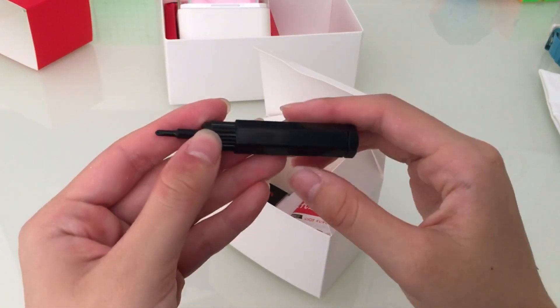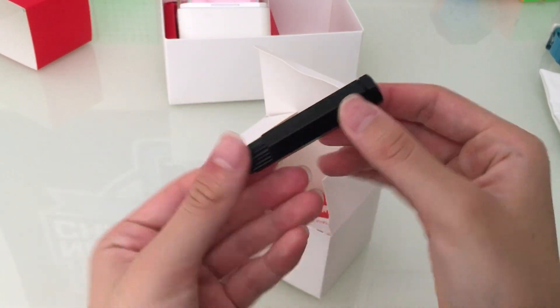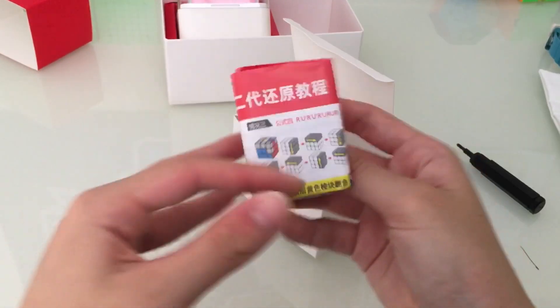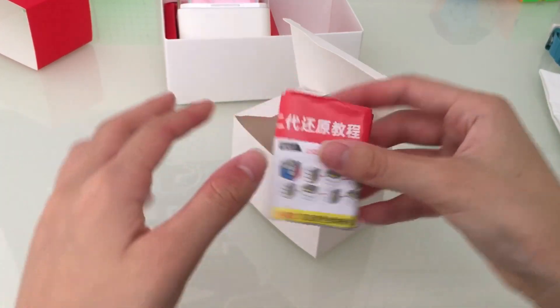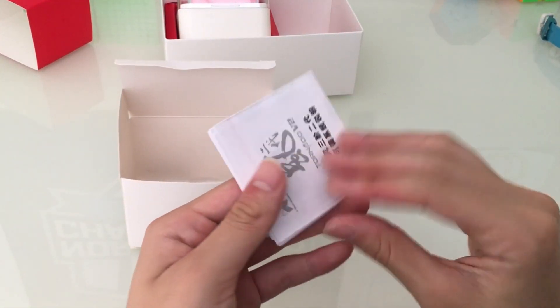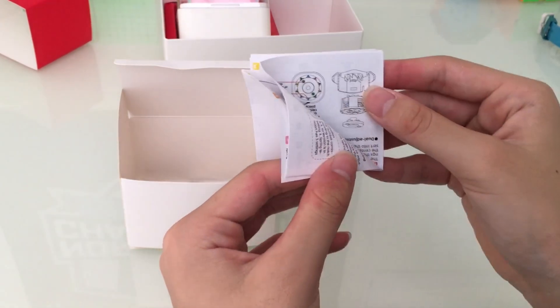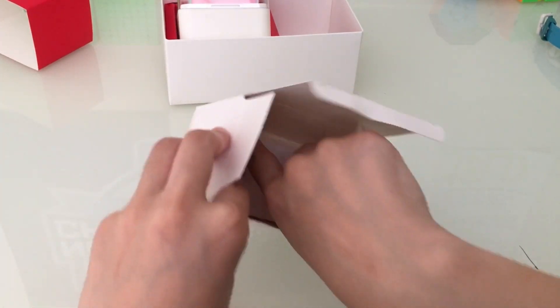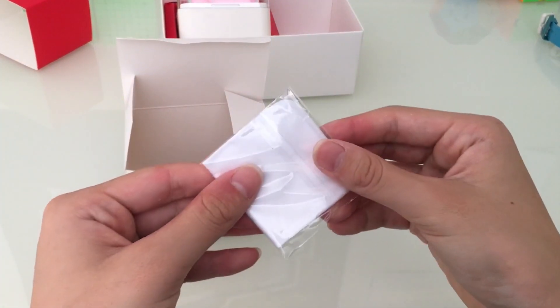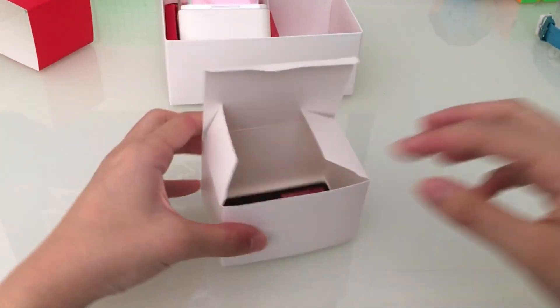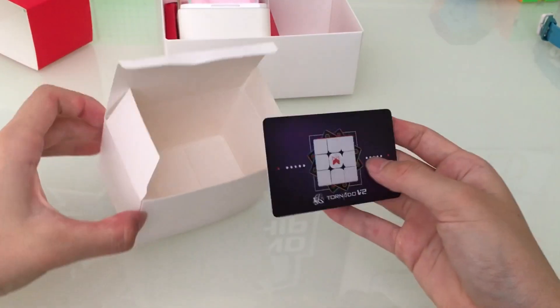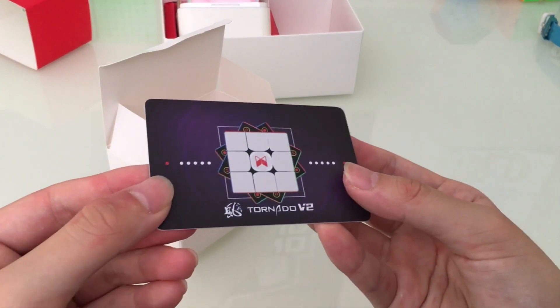What else do we have? I've got, I don't know what that is. I've got a cube how-to-solve pamphlet and a pamphlet on how to adjust the springs and stuff, and there's a cleaning cloth, and last but not least we have this pretty nice card.